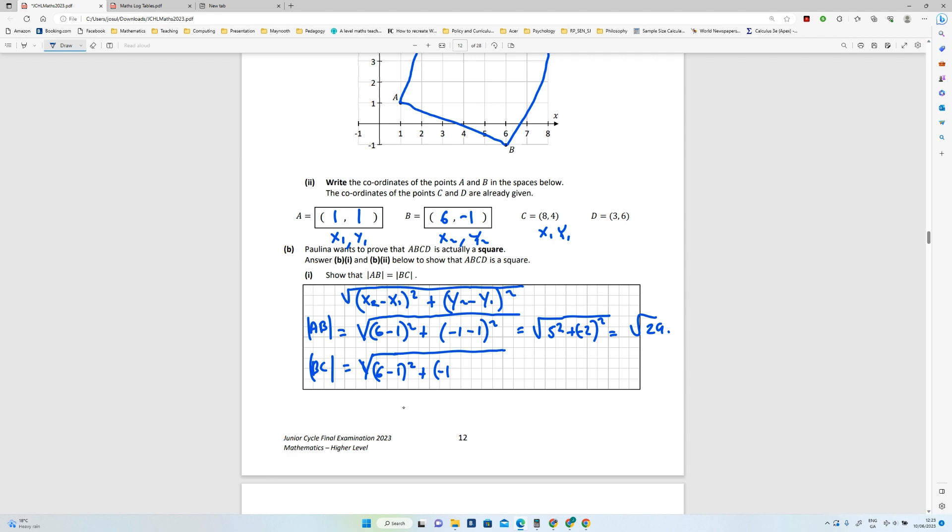Sorry, what did I do there? That should be 6 minus 8. And this is going to be (-1 - 4) squared, which will give me (-2) squared plus (-5) squared, which would give me 4 plus 25, is also root 29. So we've proved that part. Okay.